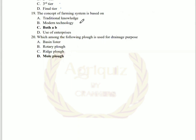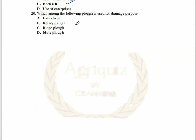The concept of farming system is based on both traditional knowledge as well as modern technology. The last question: which crop or implement is used for drainage purposes? For drainage, we use a mold plow. Resin lister is used to reduce runoff. Rotary plow is used for cutting and pulverization. Ridge plow is used to make the region furrows. And mold plow is used for drainage purposes.